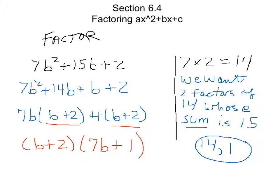Just check it out. b times 7b plus 1—I'm sorry, b plus 2 times 7b gives me this. b plus 2 times 1 gives me this. And there we go. So that's a kind of cool little thing right here. And we'll practice a couple more and you'll get the hang of that.